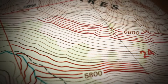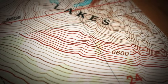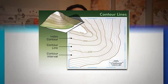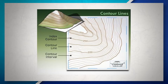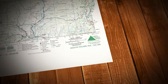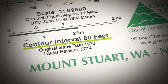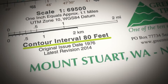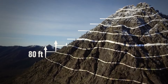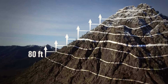The change of elevation between contour lines is always the same for each map, so pay attention to the contour interval listed in the legend of the map. For instance, a topographic map with a contour interval of 80 feet means there is an 80-foot elevation change between each contour line.